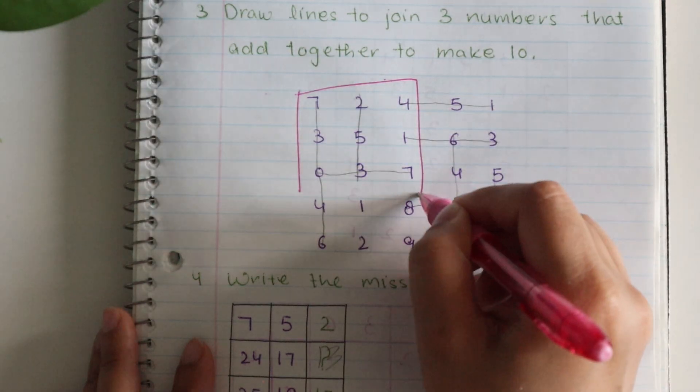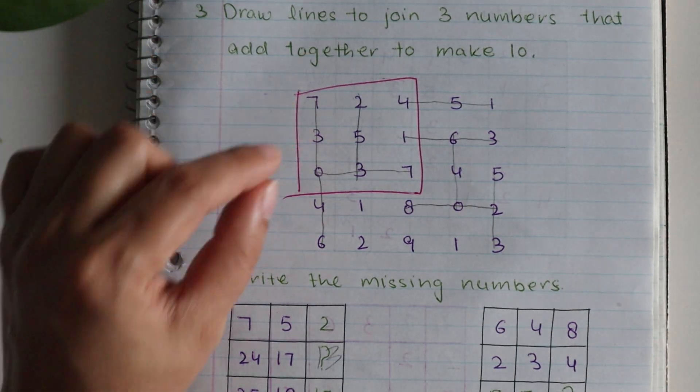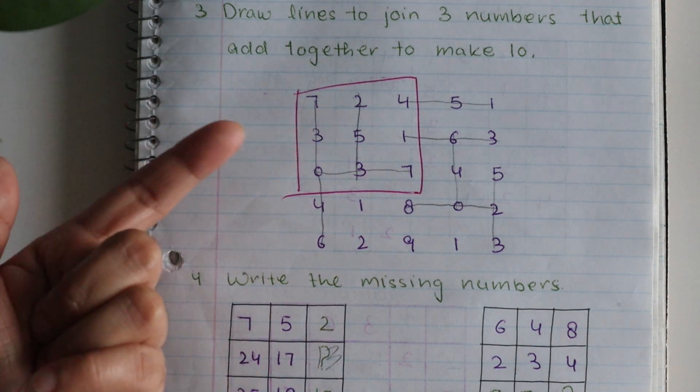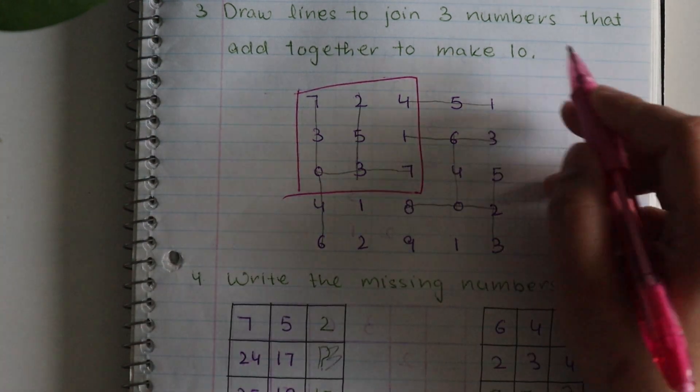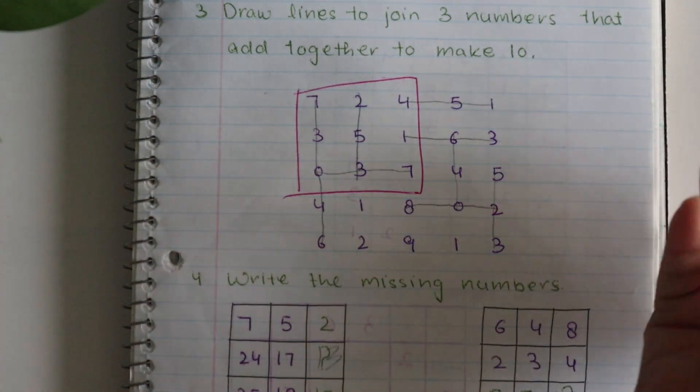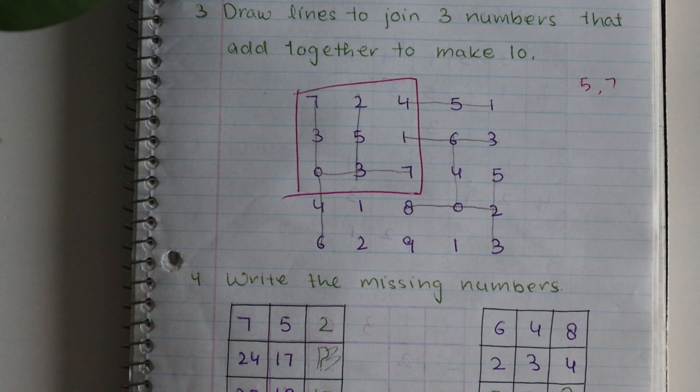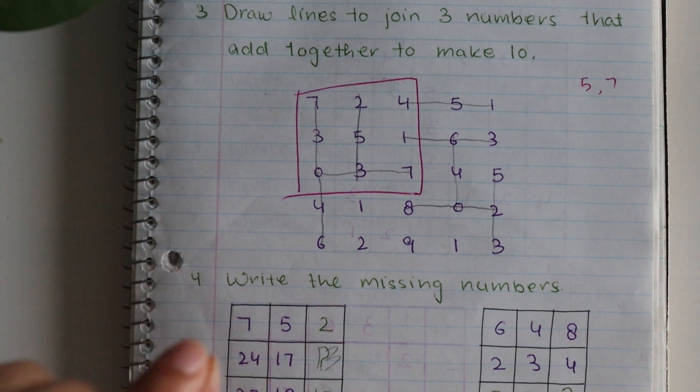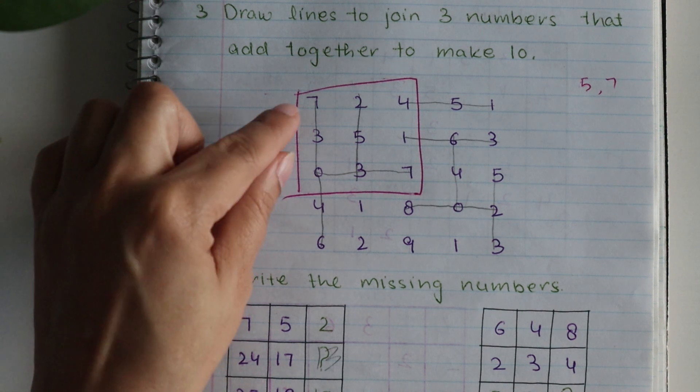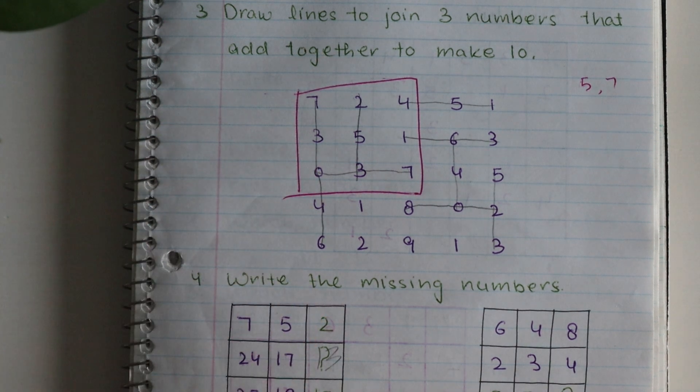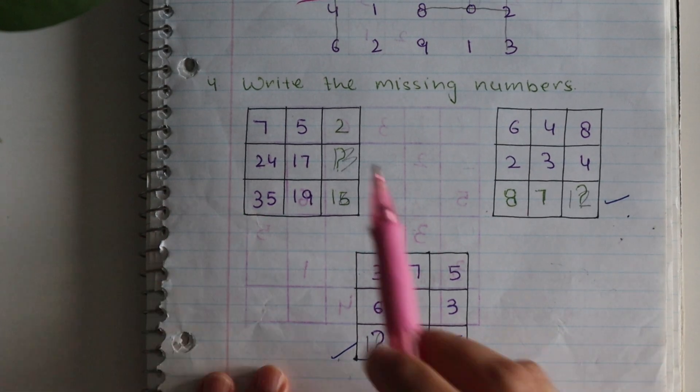Here I will suggest one thing: as the child is doing this worksheet for the first time, you can just give such a grid to the child and start with two numbers. For example, you can say draw lines to join two numbers that add together to make five or seven. Start with a smaller grid so the child is not confused and the concept will become clear. Once the child understands the concept, then you can give such a grid with three numbers.